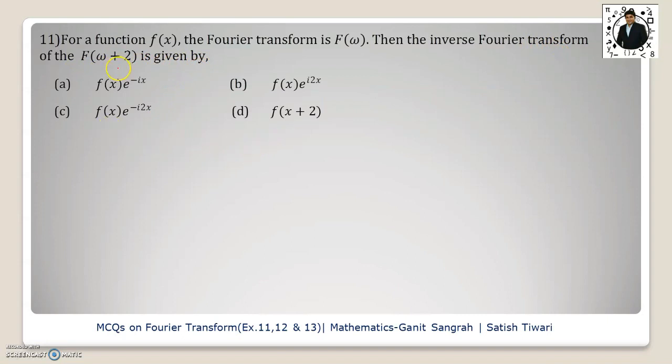To get the Fourier transform, we are applying shifting in omega. So, here plus 2 is here, therefore we write e to the power minus i2x and then fx.